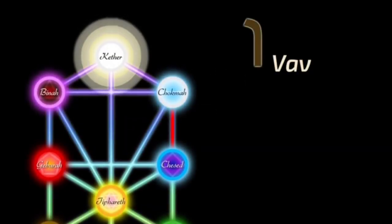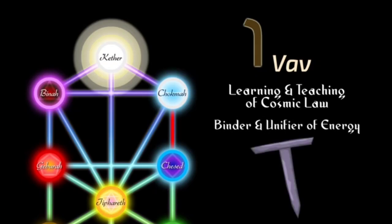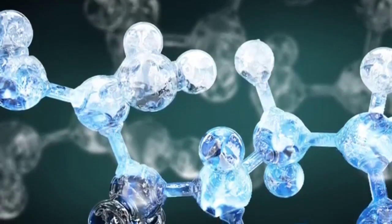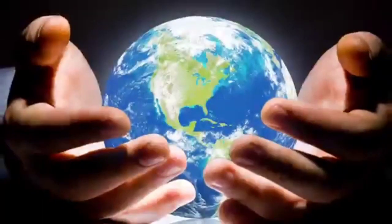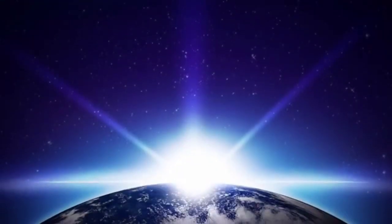The sixth path: Vav. Vav is the pathway of the learning and teaching of cosmic law. It is the sixth path and the binder or unifier of energies. Vav often means nail, or sometimes hook or anchor, meant to represent the thing that joins other things together and holds them in that state. This is the cosmic principle that allows atoms to form bonds together and create molecules. However, at this ethereal level, there is still nothing manifested yet. Thus, this is the power of the creator to enter into the world. To us, it represents the geometry of the Merkaba and the connection between heaven and earth.